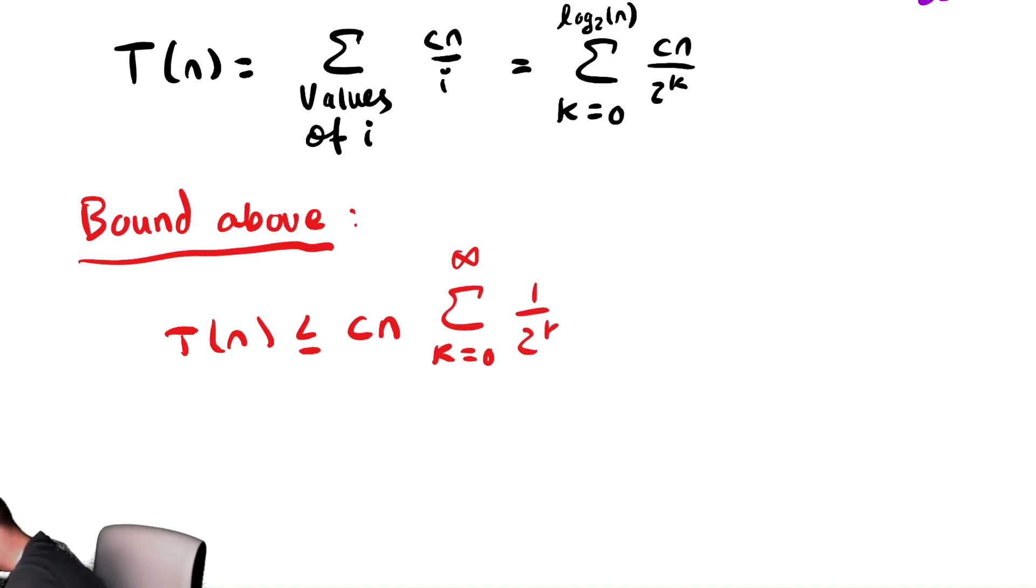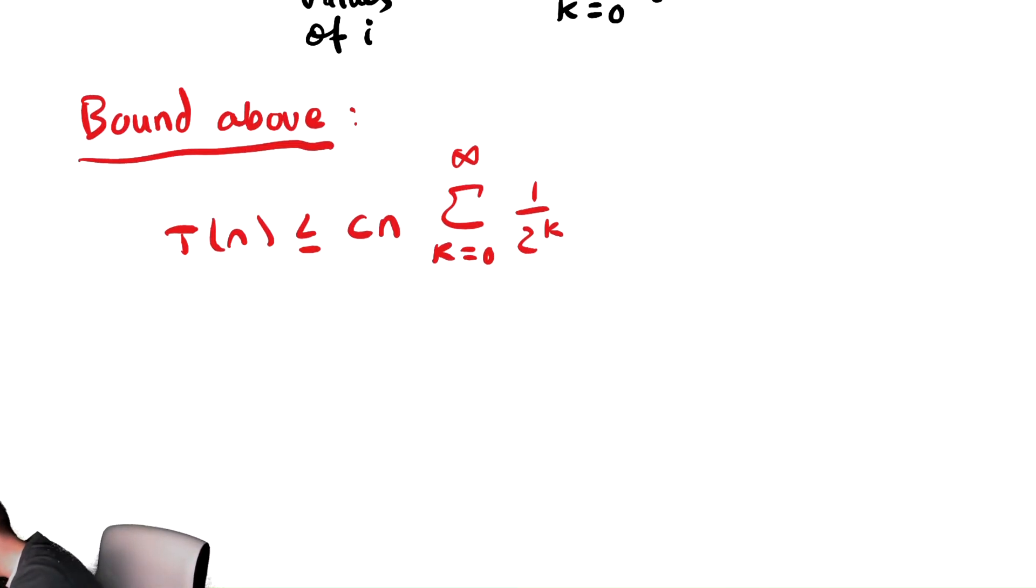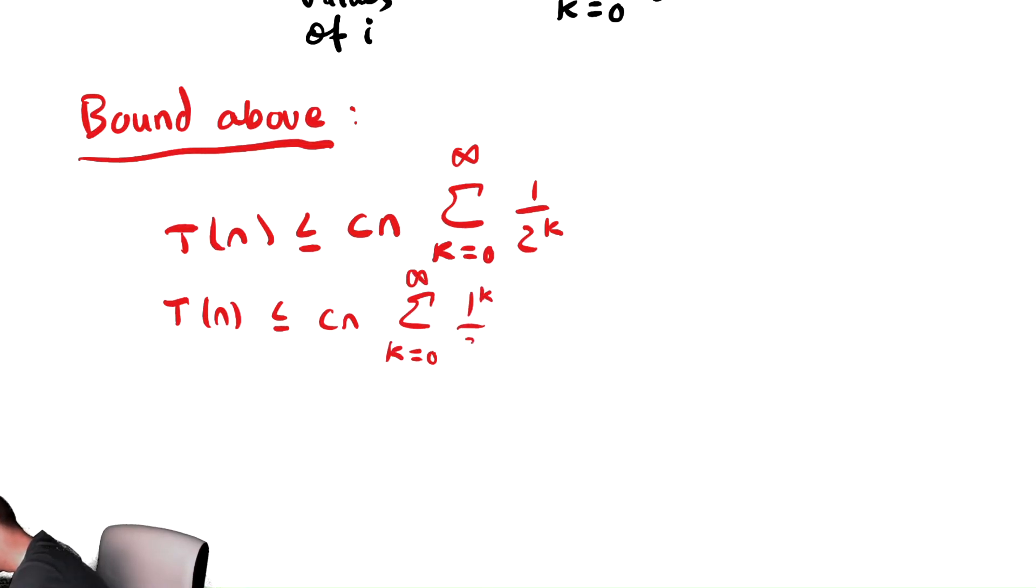Then we have one divided by 2^k. So I did two things there. Factor out the cn and change the top bound to infinity. And now I'm going to try to rewrite this as one number raised to the k. This is less than or equal to cn. The bounds of the sum I'm remaining untouched. And I can write this as one to the k divided by two to the k, which is just one half to the k. So let's write this as one half to the k.